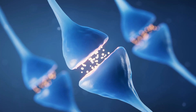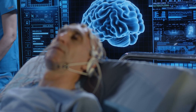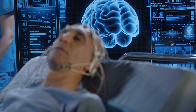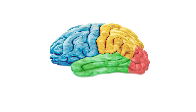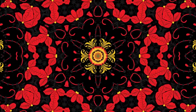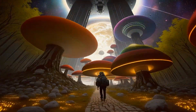The visual cortex is located in the occipital lobe and is responsible for processing visual information. When things go wrong here, it can manifest as something as little as seeing colorful patterns to full-blown scenes that aren't actually there.